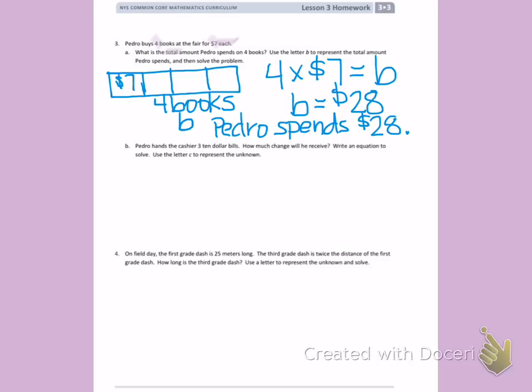Part B: Pedro hands the cashier three $10 bills. How much change will he receive? Write an equation to solve. Use the letter C to represent the unknown.